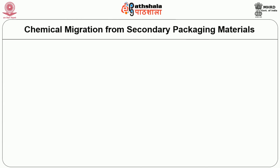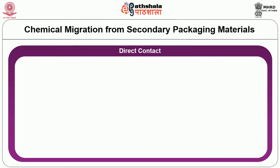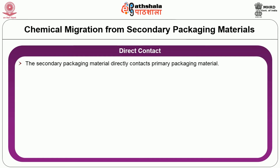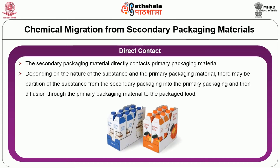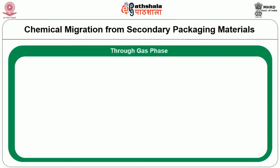Let us now discuss about chemical migration from secondary packaging materials. Transfer of substances from secondary packaging to foods can be considered to take place by two main routes. The first one is direct contact: the secondary material directly contacts the primary packaging material. Depending on the nature of the substance and the primary packaging material, there may be a partition of the substance from the secondary packaging into the primary packaging and then diffusion through the primary packaging material to the packaged food.